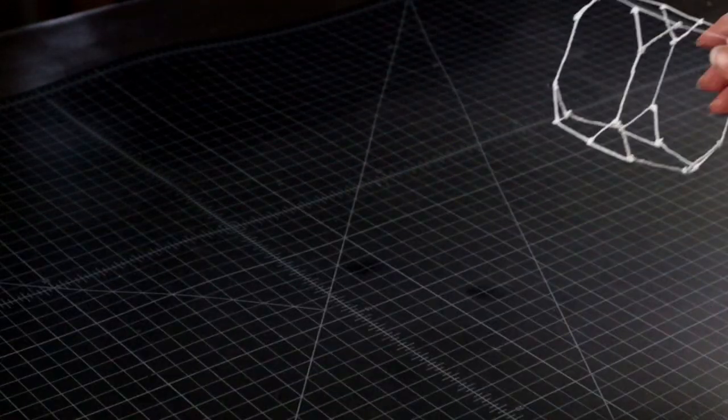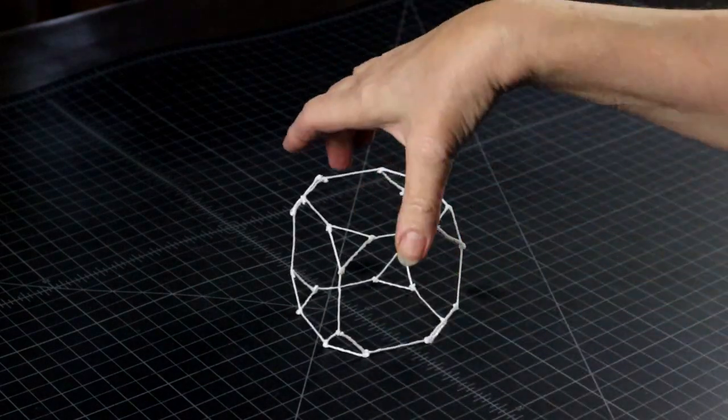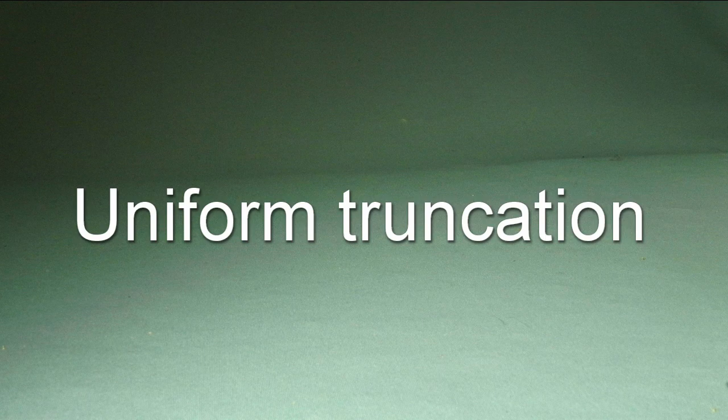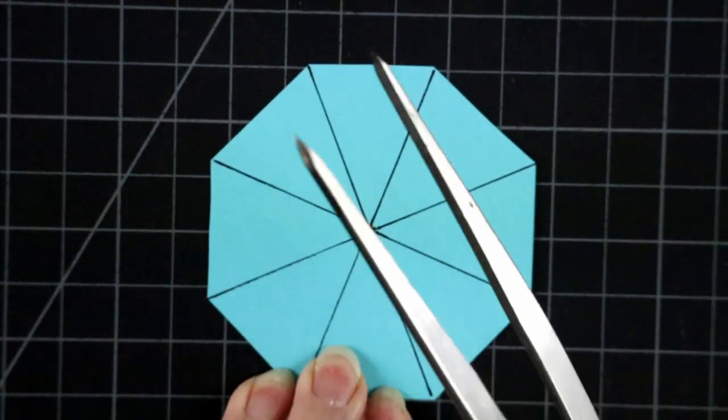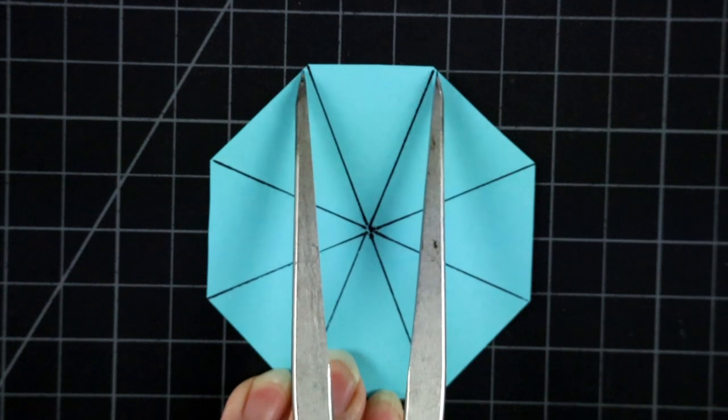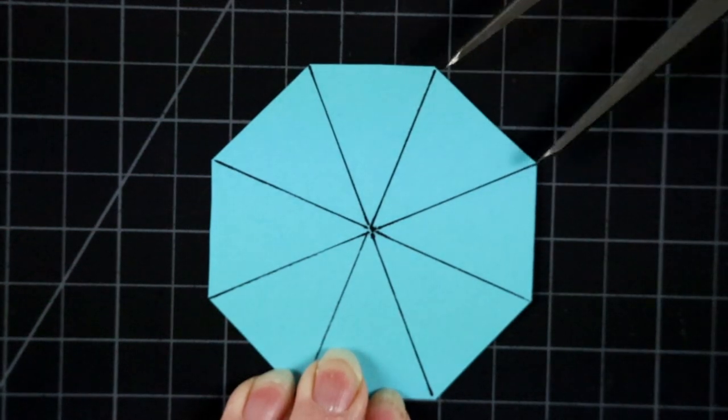Here is our truncated cube, and if you are thinking, well, those triangles are really not that big, you can definitely make them bigger. Remember, as you cut off bigger triangles at the corners, there comes a point where whatever is left of the side of the original square equals the side of the triangle, and your square face becomes a perfect octagon.